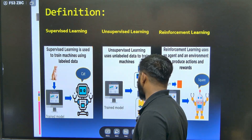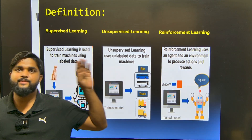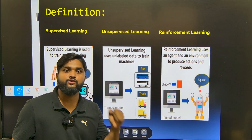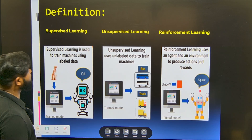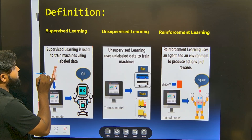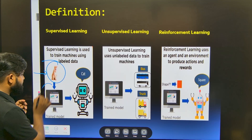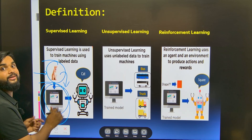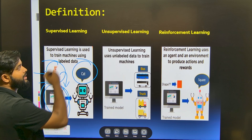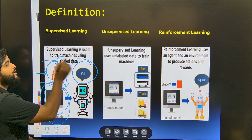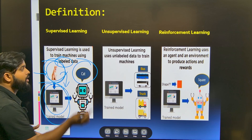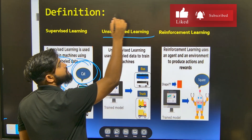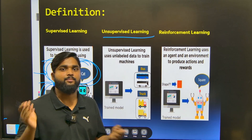Now let's see the different types of machine learning. There are basically three types: the first is supervised, the second is unsupervised, and the third is reinforcement learning. Supervised machine learning means we take data — for example, data of a cat — feed it to a training model, and make the model predict that it is a cat. Supervised learning is used to train machines using labeled data, where we predict the same category as the input.